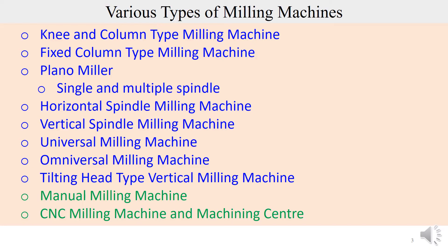There are various types of milling machines. All of them you will not find in a standard shop floor — some of them are popular, some can be called almost exotic. One such is the Omniversal milling machine, which you will not find readily in most shop floors. Another one is the Plano miller, found only in shop floors dealing with heavy industries. Depending on the type of control used, you have manual milling machines as well as CNC milling machines and machining centers.